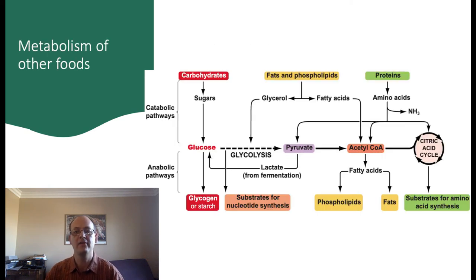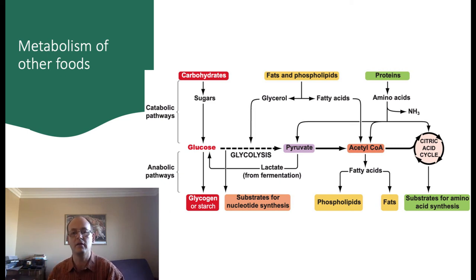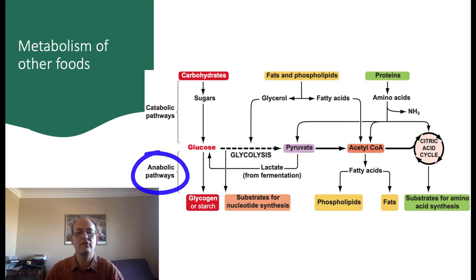We've looked at how glucose is metabolized, but sugars and carbohydrates in general aren't the only things that can be turned into energy. Fats and proteins are also good sources of energy. These other molecules are broken up into their constituent parts and then fed into the glycolytic pathway. Some molecules feed into the glycolytic pathway early and provide a lot of ATP per molecule; others feed in relatively late and provide somewhat less ATP. In addition, the glycolytic pathway also serves as a source of many different compounds, including nucleotides, lipids, proteins, and other carbohydrates.